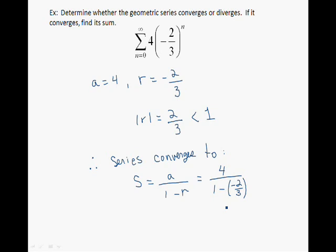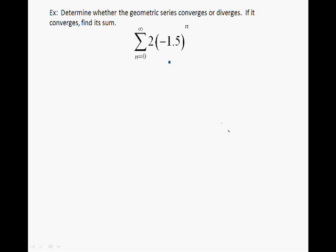Let's look at another example. Once again, we're asked to determine whether the geometric series converges or diverges. We identify A equal to 2 and R equal to minus 1.5. The absolute value of R is greater than or equal to 1, so the geometric series diverges. This concludes the presentation on geometric series.